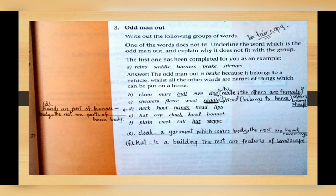Which is different here? Bull is different here. What is the answer? Because it is a male and the others - all names in this group are female. Number C: shearers, fleece, wool, saddle. Which is the odd man out here? Saddle - you will underline it. It is the odd man out because it belongs to horse and others - all things that we have read - belongs to sheep. Flock word is also there, so you will underline only saddle because it belongs to horse.